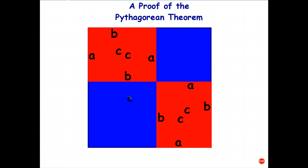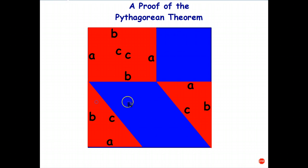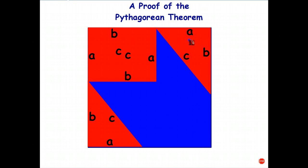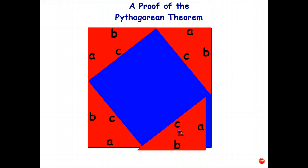So just by moving the pieces around, I haven't actually changed how much of the blue we can see. But in one form, it's C squared. But when I rearrange the pieces, I get A squared plus B squared.